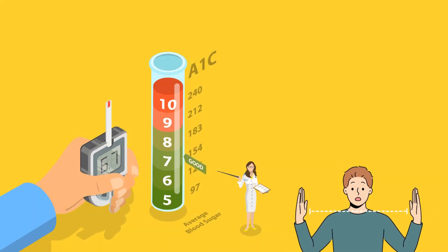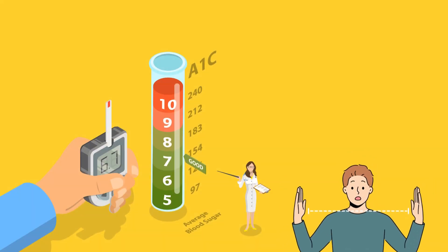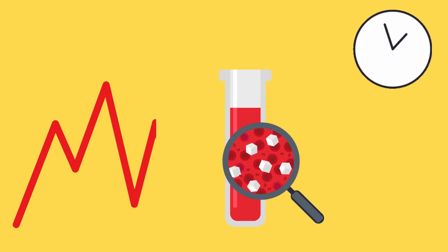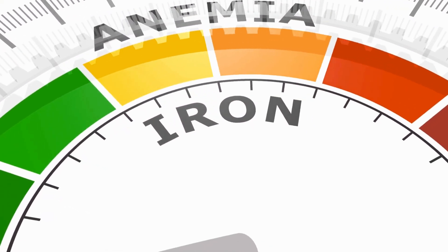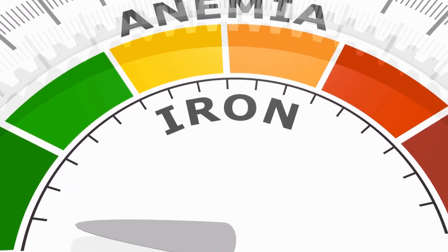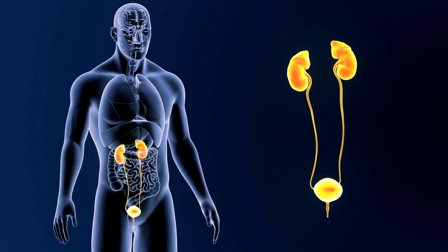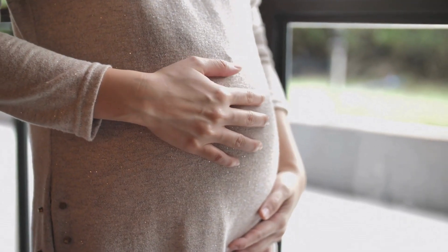However, A1c has some limitations. It doesn't show how much your glucose levels fluctuate throughout the day or how often you experience highs and lows. It also can be affected by factors such as anemia, kidney disease, pregnancy, and some medications.